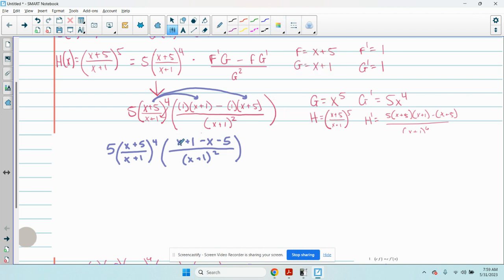Well, x minus x, they cross out. 1 minus 5, I'm left with negative 4. So h prime of x is going to be negative 4 times 5 or negative 20.